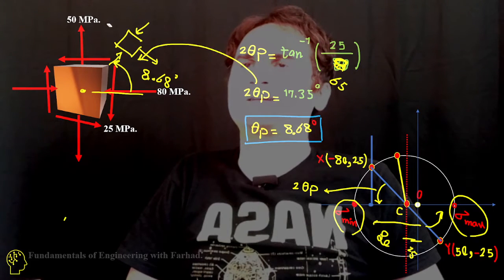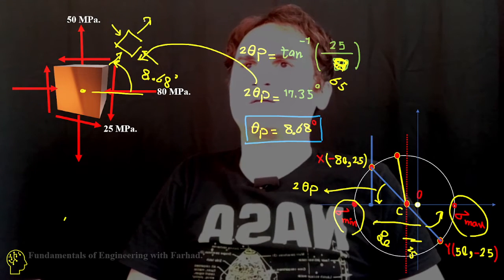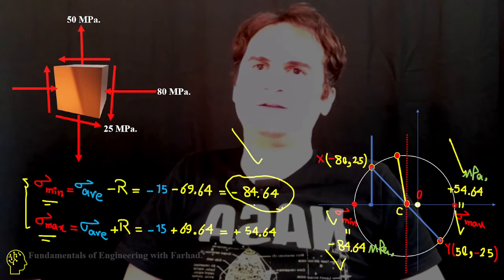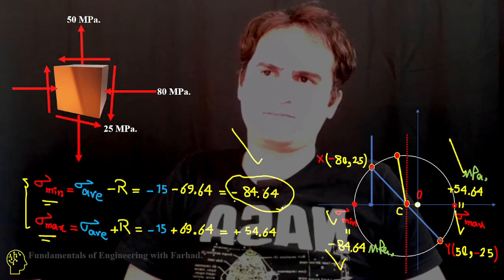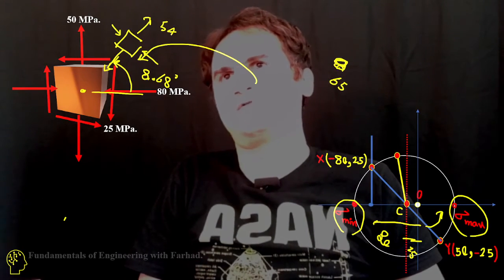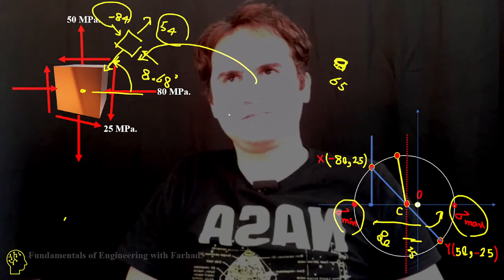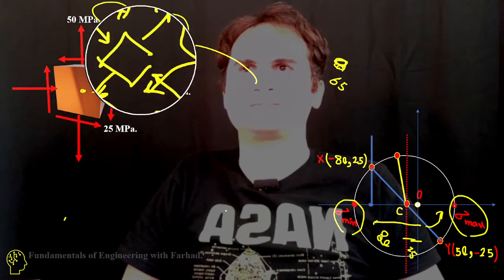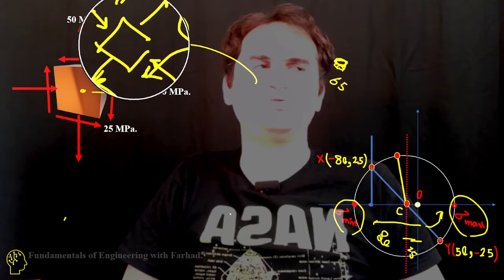Let's see what our values are: 84.64 and 54. The important point is that at just 8.68 degrees counterclockwise, there is no shear in our element, either pull or push.